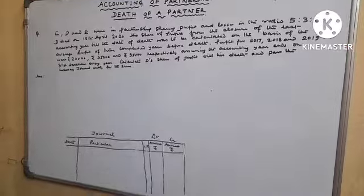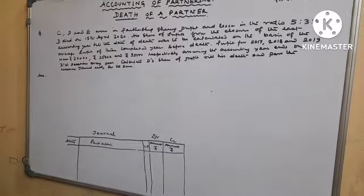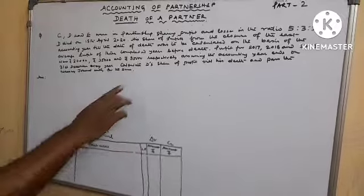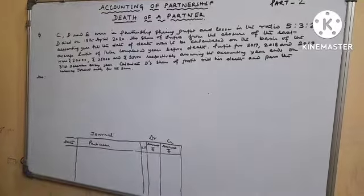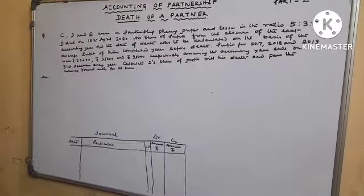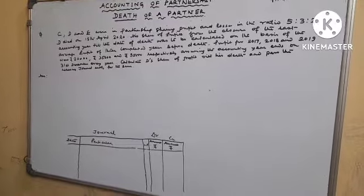Assuming the accounting year ends on 31st December every year, calculate D's share of profit till his death and pass necessary journal entry for the same.